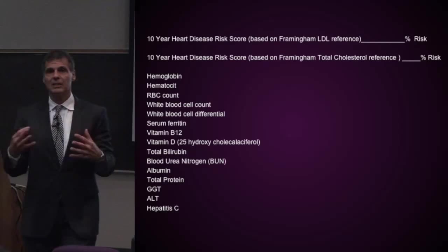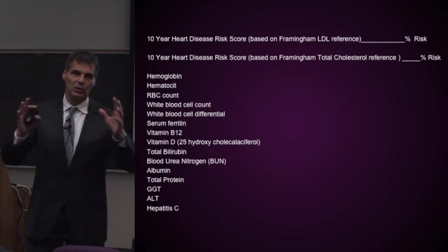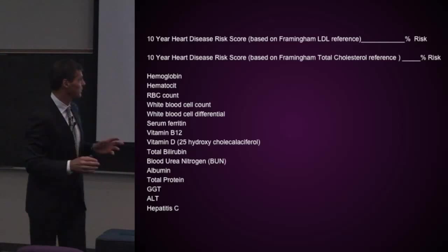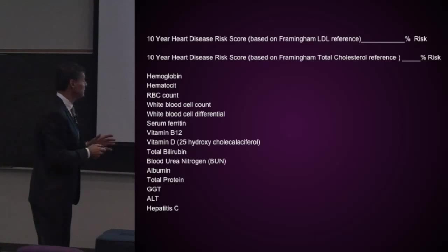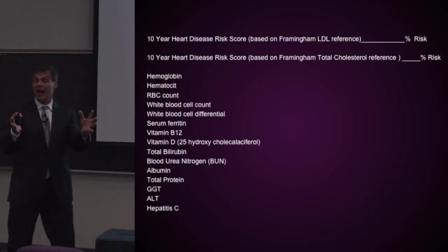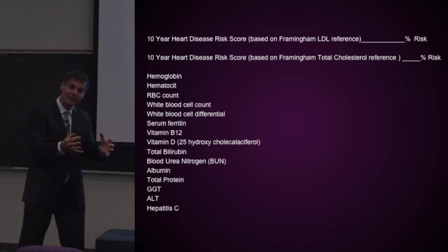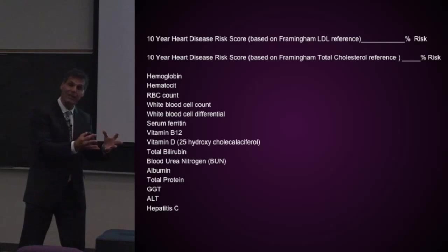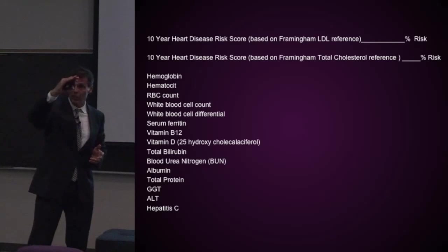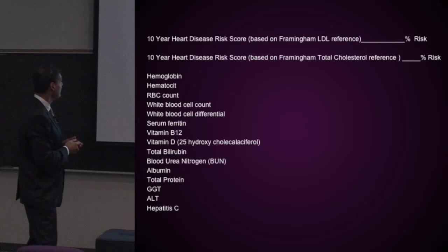We'll revisit some of this when we talk about other diseases and get into what white blood cells do in particular instances and why that's important. What's the serum iron level? If iron levels drop down, I know this person's going to be fatigued, they might develop anemia, their immune system won't work well, and they might feel depression. So I need to know serum ferritin, because low serum ferritin is a very common finding in women today.